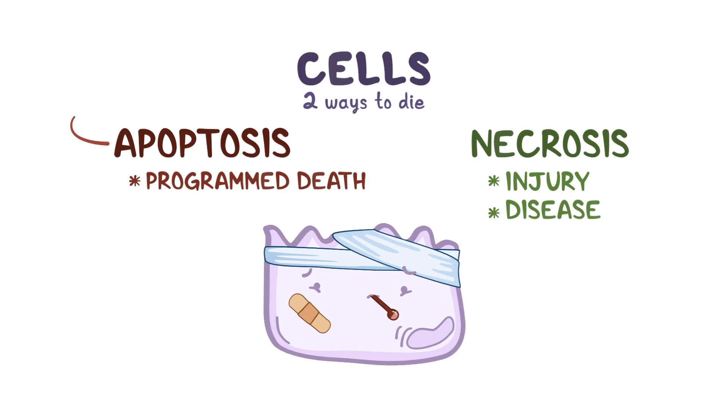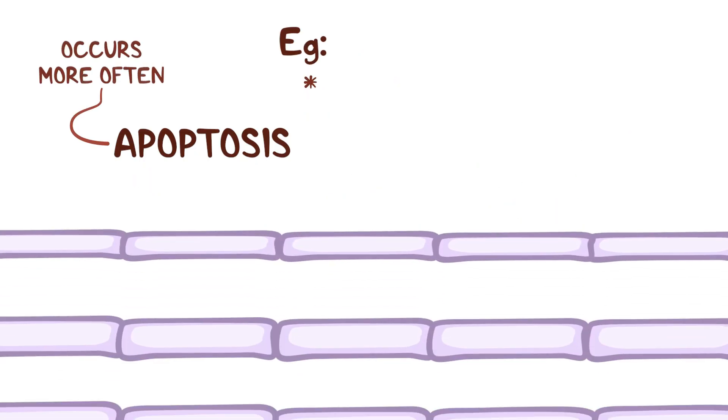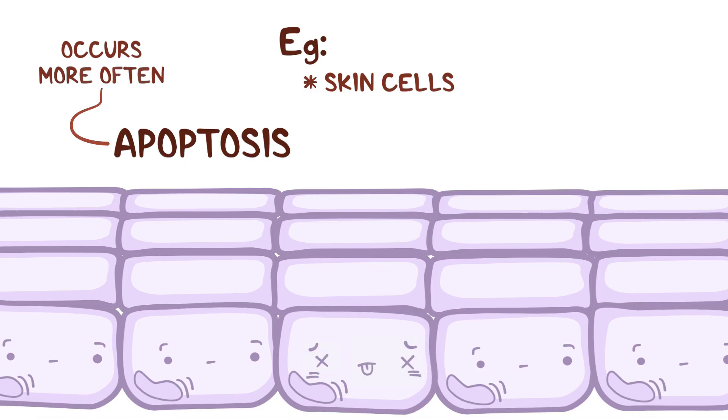Overall, apoptosis occurs much more often than necrosis. One example is when our old skin cells undergo apoptosis and get replaced by new skin cells.